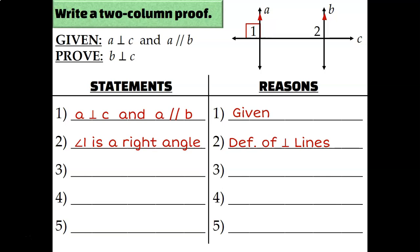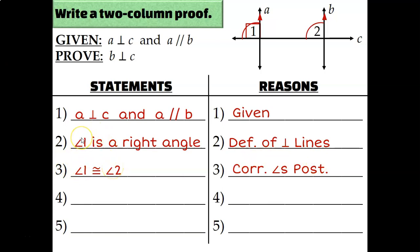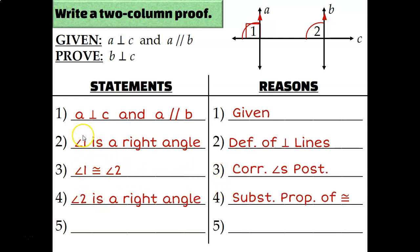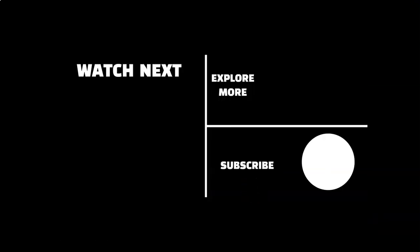Since A and B are parallel, all pairs of corresponding angles are congruent. Angle 1 and angle 2 are corresponding — both in the top left-hand corner — so angle 1 is congruent to angle 2 by the corresponding angles postulate. Since angle 1 is a right angle and angles 1 and 2 are congruent, by the substitution property angle 2 is also a right angle. Since lines B and C intersect to form a right angle, B is perpendicular to C by the definition of perpendicular lines.